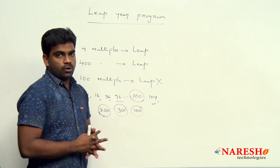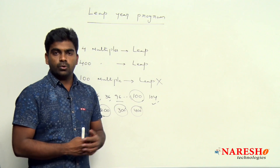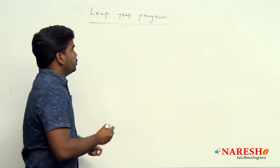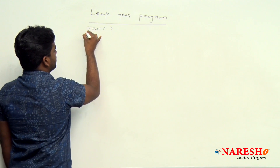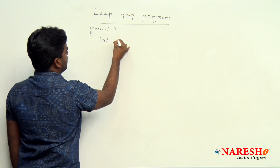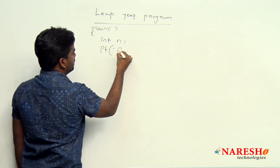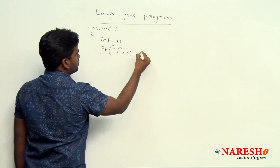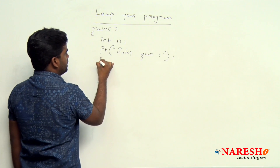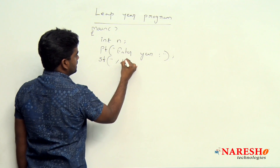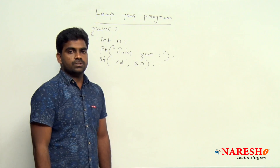So how can we simplify this logic using if-else condition? I am writing the code now. Program execution starts with the main function. We are reading one year into variable n, and asking printf "enter year" — whatever year you want to check, leap or not. We are reading it using scanf with %d and the address of n.